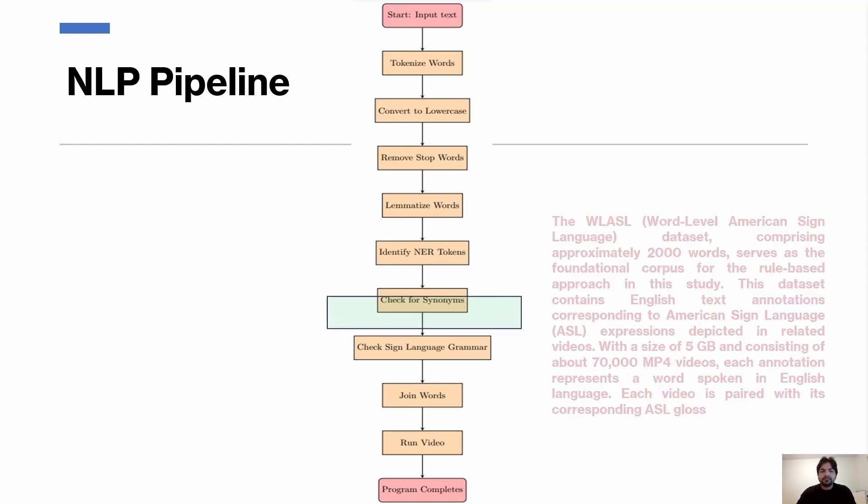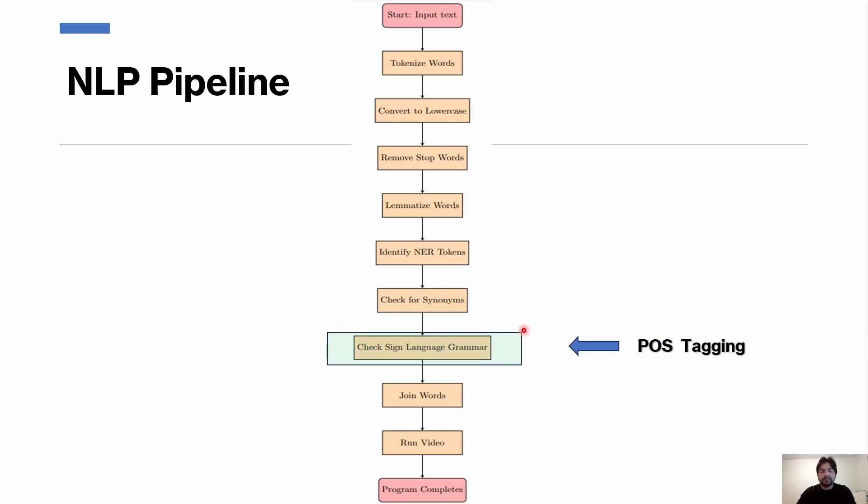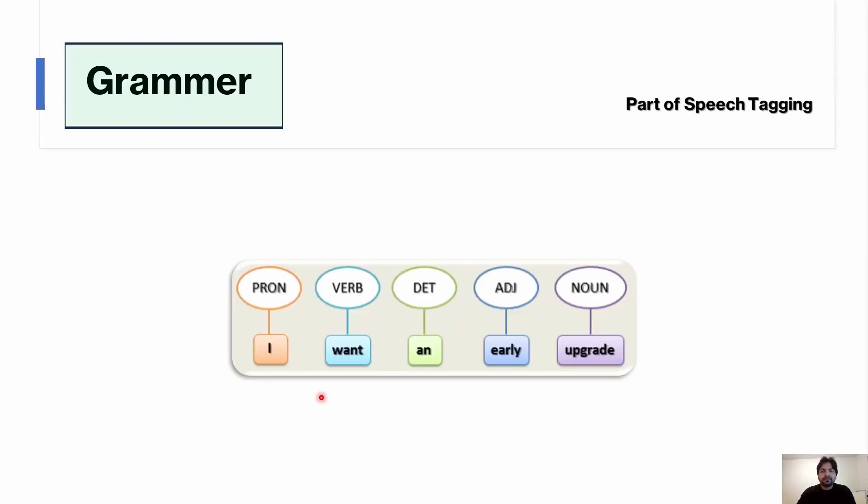After the synonyms, the grammar was checked because as we discussed earlier, sign language grammar has its own syntax. For this I used POS tagging. POS tagging, or Part-of-Speech tagging, is like giving each word in a sentence a label that shows what type of word it is - whether it's a noun, adjective, verb, and so on. This helps the computer understand the structure and meaning of the sentence better, which is super handy for language analysis and translation tasks. I used POS tagging to label each word in spoken English with its part of speech.